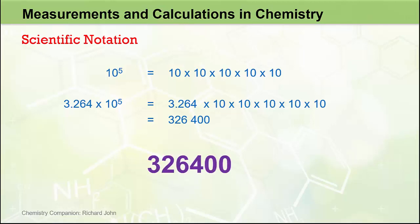If we look at that number 326,400, how do we arrive at it from the scientific notation form? What we actually do is identify where the decimal place is in the coefficient, and it's as if that decimal place has been moved 5 places to the right, corresponding to the exponent of positive 5.